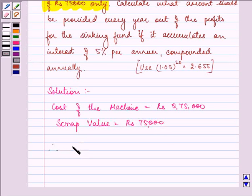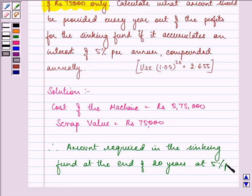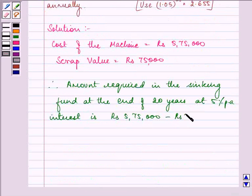So, that means amount required in the sinking fund at the end of 20 years at 5% per annum interest is Rs. 5,75,000 minus Rs. 75,000, which is equal to Rs. 5,00,000.